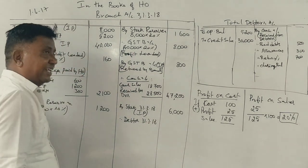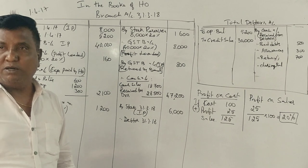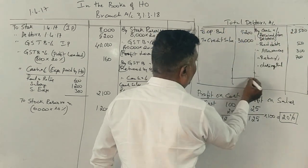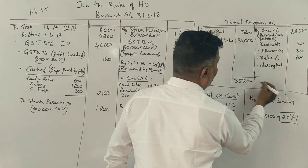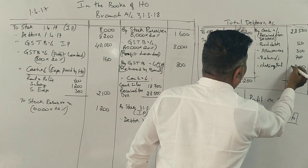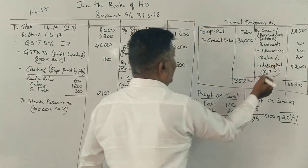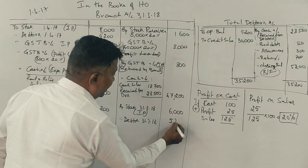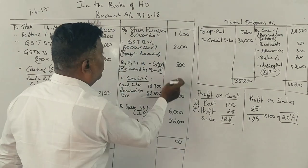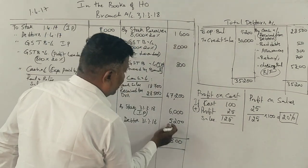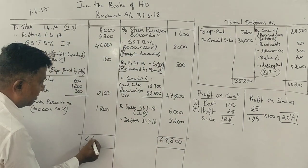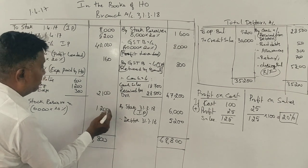Now calculating the closing balance. The closing stock reserve is 1,200. The total on both sides needs to be balanced. Let me calculate the totals.